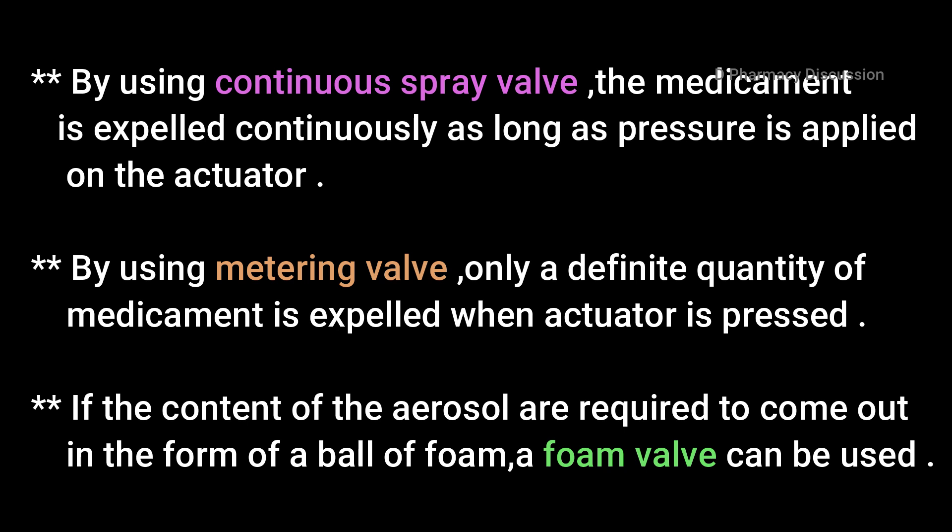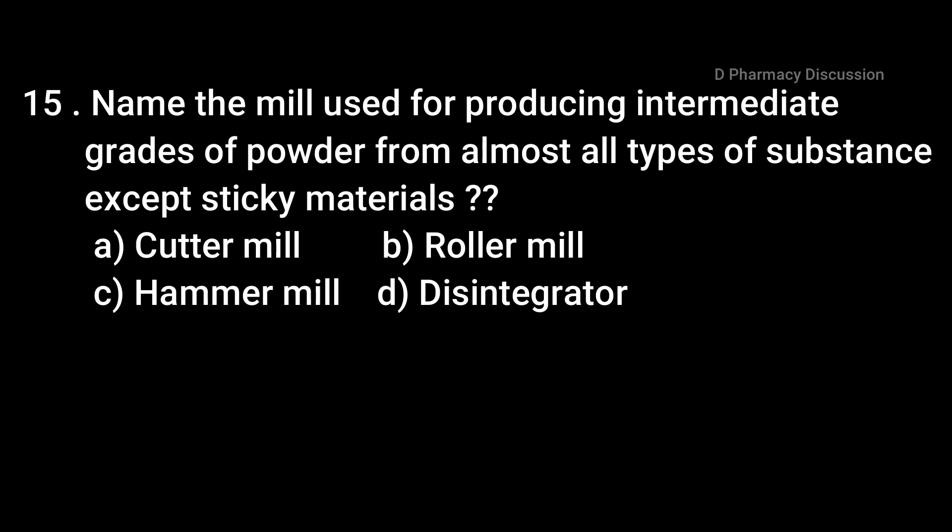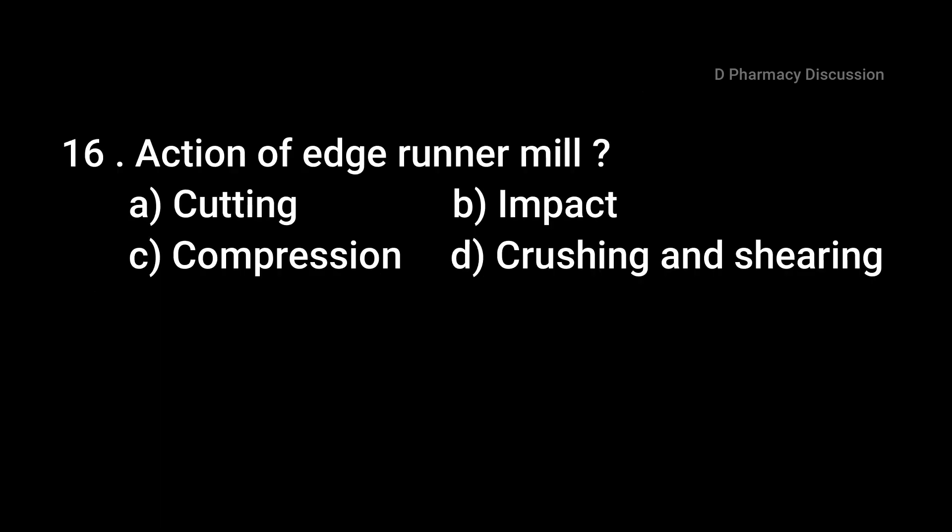Question 15: Name the mill used for producing intermediate grades of powder from almost all types of substances except sticky materials. Option A: cutter mill, B: roller mill, C: hammer mill, and Option D: disintegrator. Correct answer is Option C, hammer mill. Question 16: The action of edge runner mill is. Option A: cutting, B: impact, C: compression, and Option D: crushing and shearing. Correct answer is Option D, crushing and shearing.